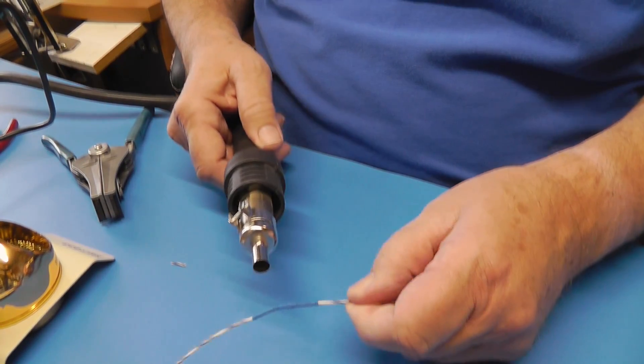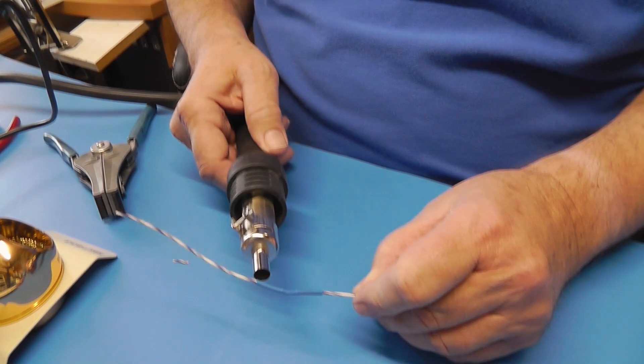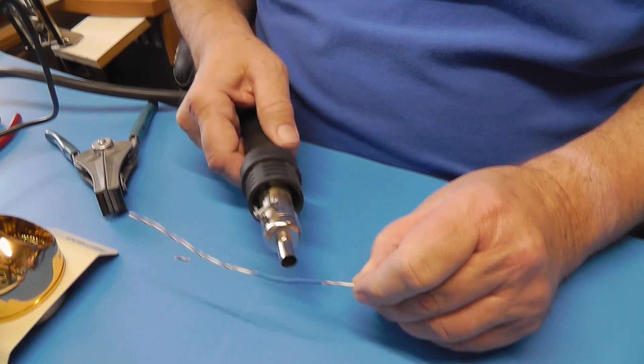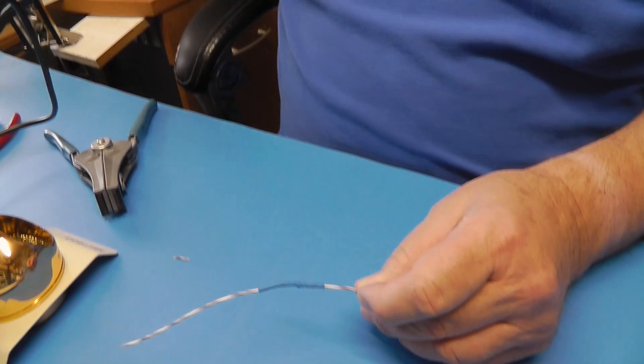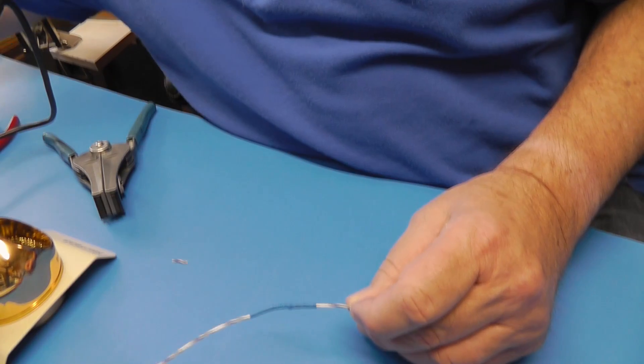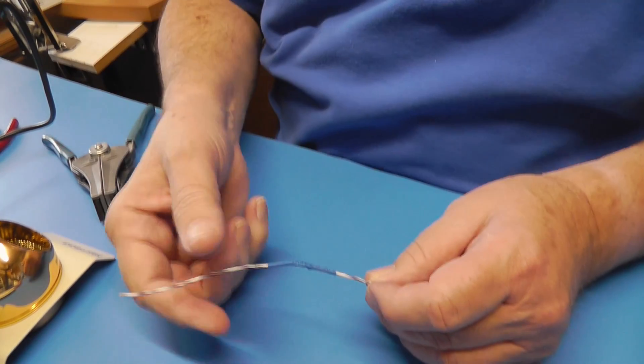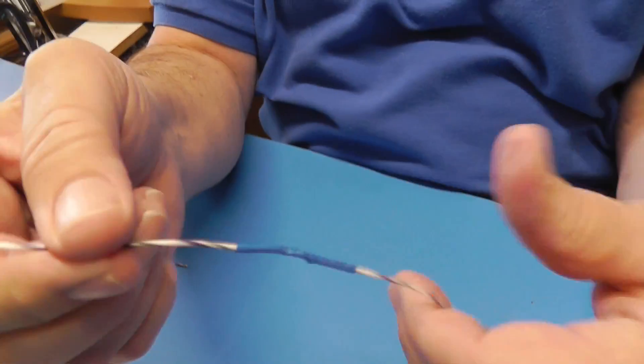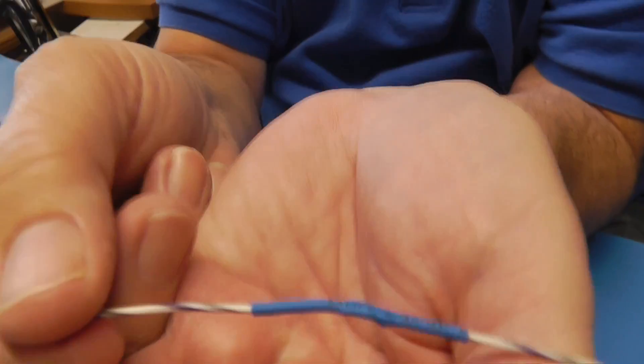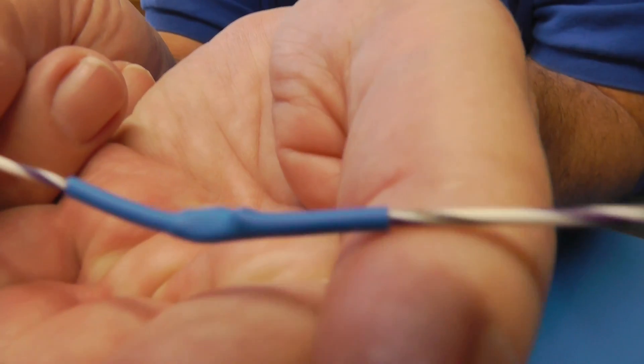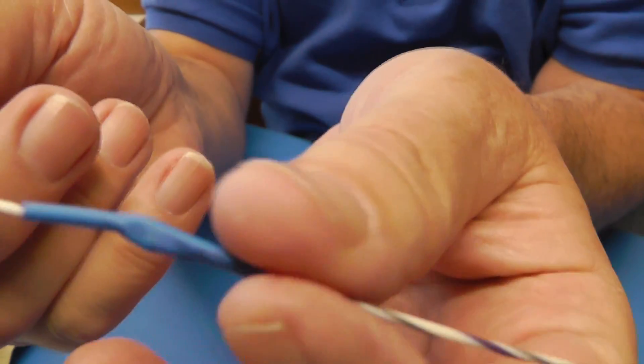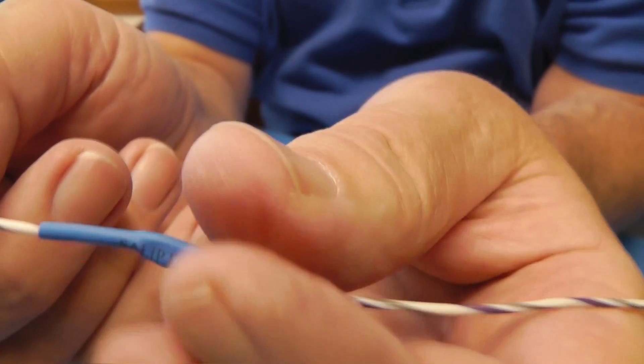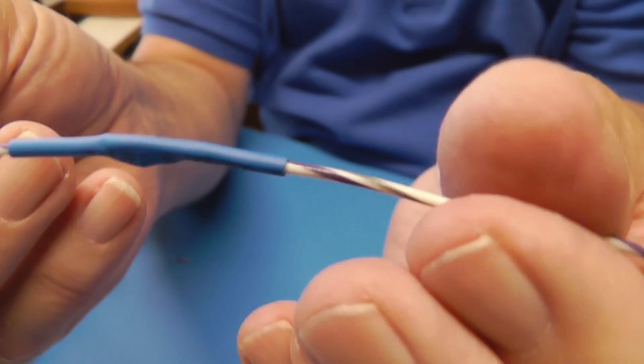You can also get heat guns at Home Depot or Lowe's that will do this very nicely. You might even try it with a hairdryer. And we're going to turn the hot air off. It takes a moment for it to cool. Now let's take a close look at this right here. That tubing has kind of wrapped itself around that. So the tubing is not going to go in any direction. It is stuck there.